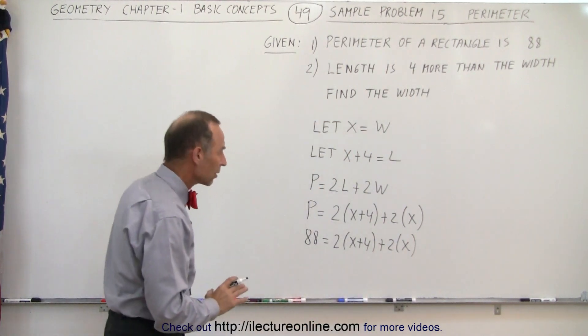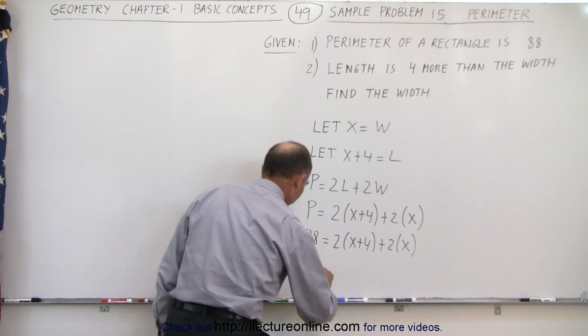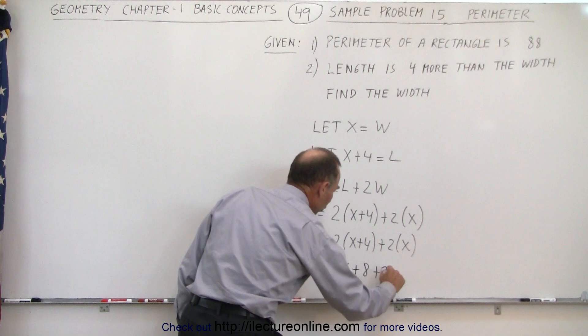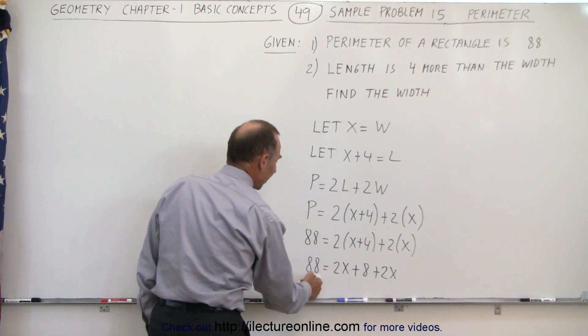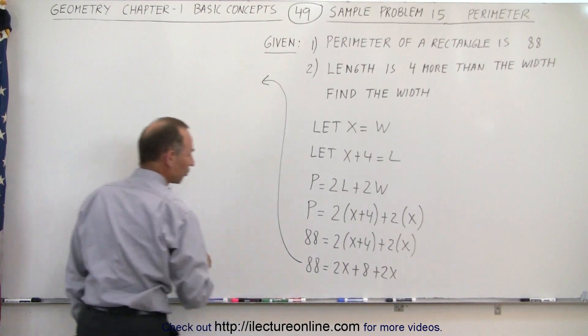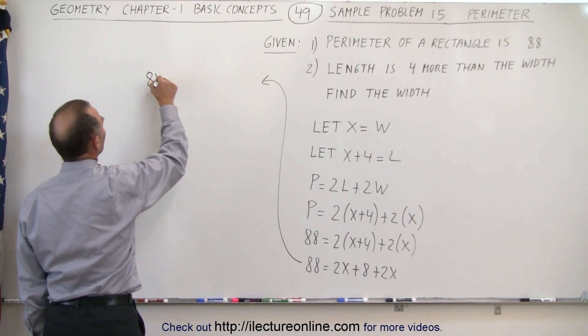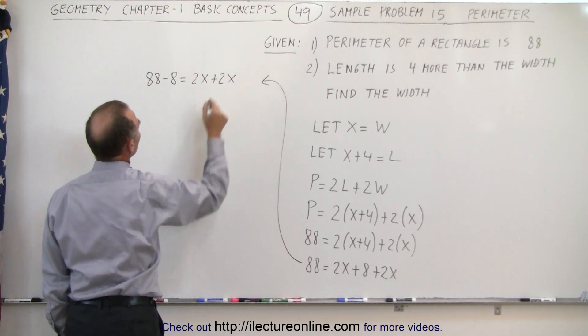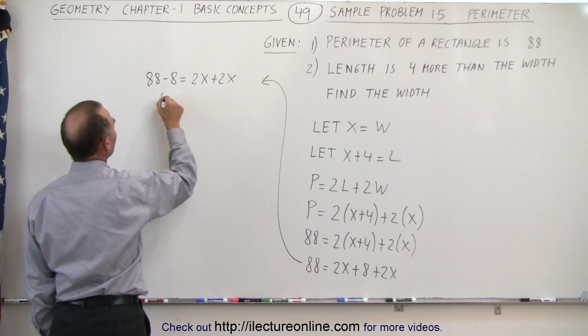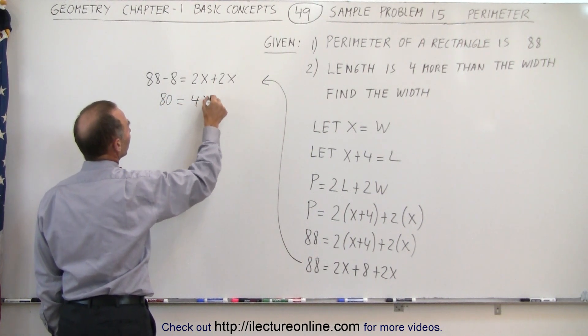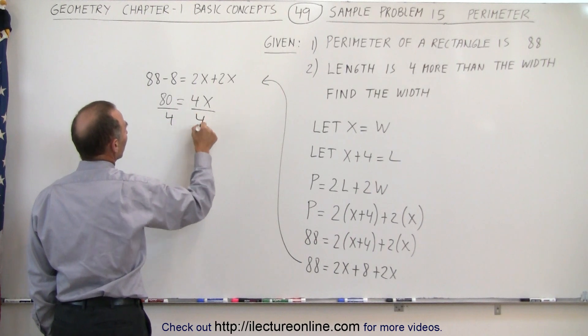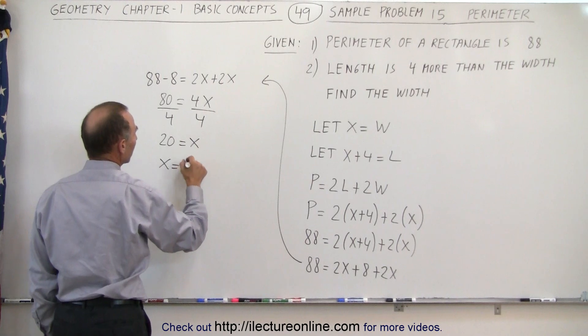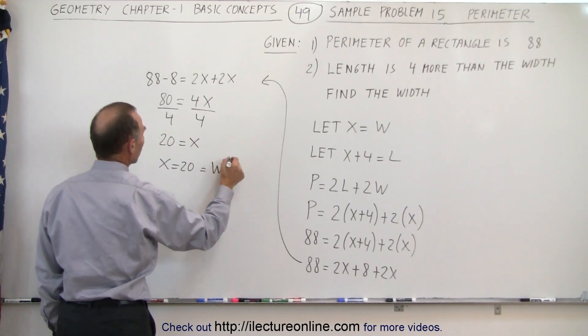So now what we can do here is get rid of the parentheses first. So we have 88 is equal to 2x plus 8 plus 2x, and then we can move the 8 to the left side. So we have 88 minus 8 is equal to 2x plus 2x. So 88 minus 8 is 80, and 2x plus 2x is 4x. Dividing both sides by 4, we now get 20 equals x, or x is equal to 20, which by the way is equal to the width.